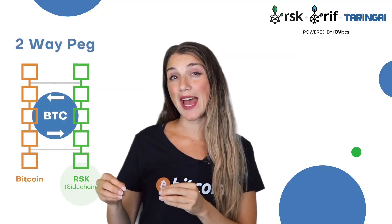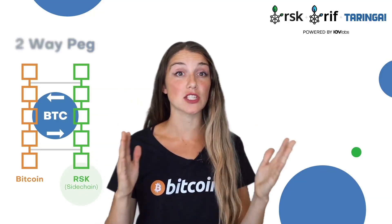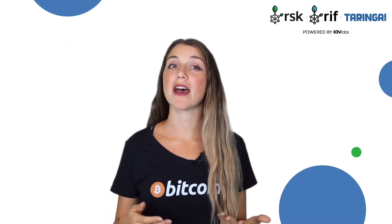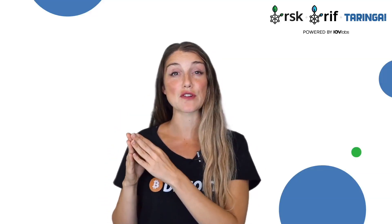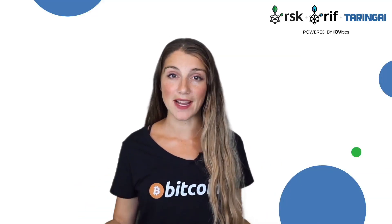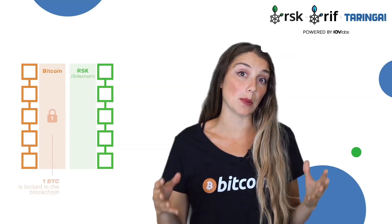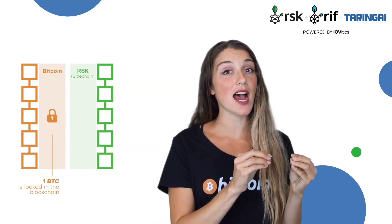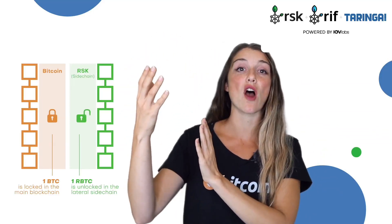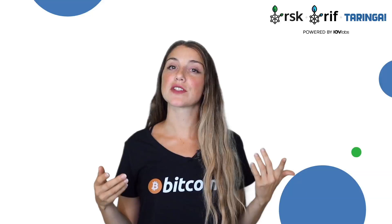By means of what is known as a two-way peg, the currencies from both platforms can be exchanged freely and automatically. The two-way peg makes it possible to transfer value from one blockchain to another. This way, Bitcoins can be sent to RSK where they are converted into smart bitcoins for use in smart contracts. The same mechanism allows the return to Bitcoin of what is no longer required, converting smart bitcoins back into bitcoins. This is achieved because there is no real conversion of cryptocurrency — what actually happens is that a certain number of Bitcoins are blocked in the main blockchain, and at the same time the same number of smart bitcoins are released in the RSK blockchain, and vice versa.